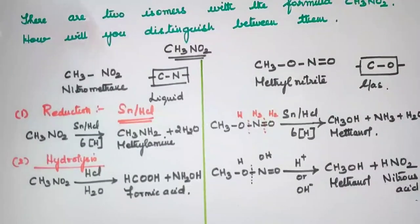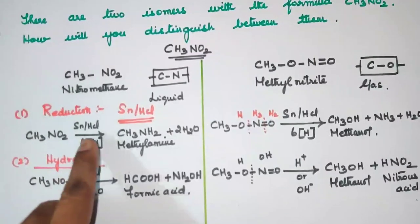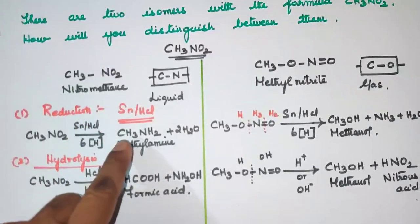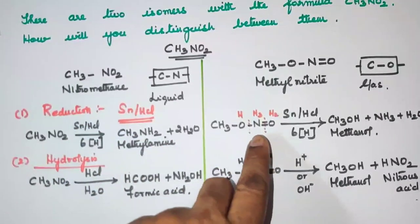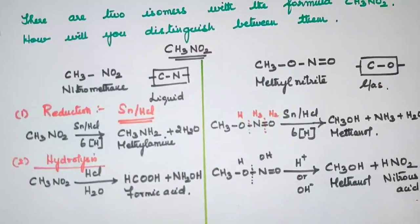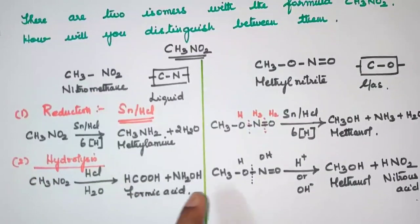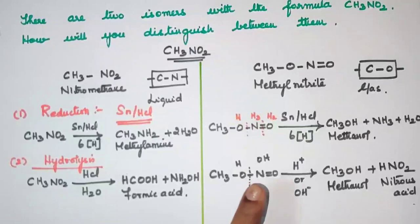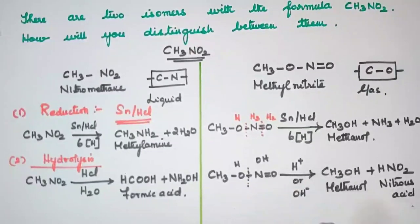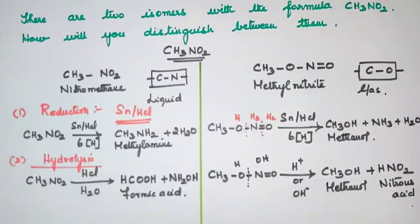In summary: nitromethane when reduced with tin and HCl gives methylamine, whereas methyl nitrite gives methanol. On hydrolysis, nitromethane gives formic acid and hydroxylamine, whereas when methyl nitrite is hydrolyzed it gives methanol and nitrous acid. These are the two important reactions that distinguish nitromethane and methyl nitrite.